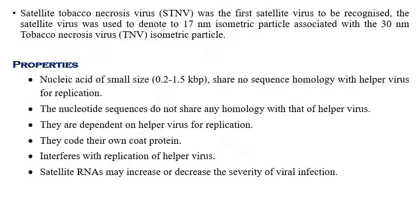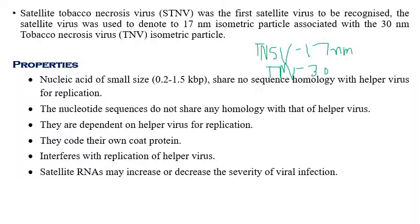Tobacco necrosis satellite virus was the first recognized plant satellite virus, with isometric particles ranging in size from 17 nanometers, whereas the tobacco necrosis virus — its helper virus — has a size of 30 nanometers. These types of size comparison questions are commonly asked in examinations.